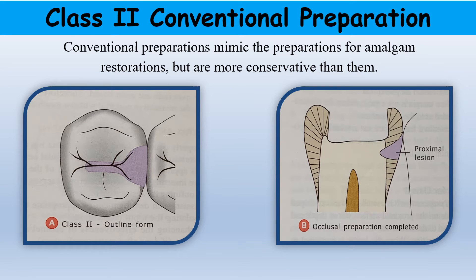Coming first to class 2 conventional cavity preparation. These preparations mimic the preparations for amalgam but they are more conservative. If you look at the first picture, the cavity preparation is narrow having as little faciolingual width as required. The pits and fissures are not incorporated in the cavity preparation, the walls converge occlusally, and secondary retentive features are usually not given.